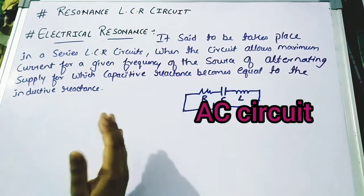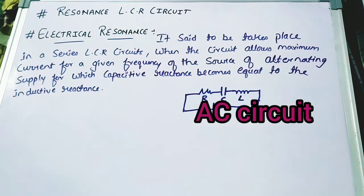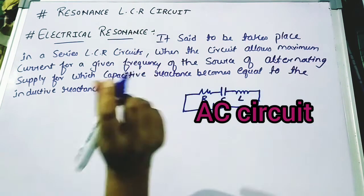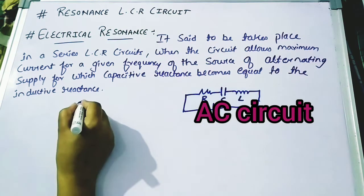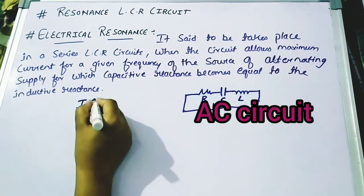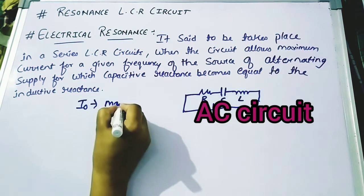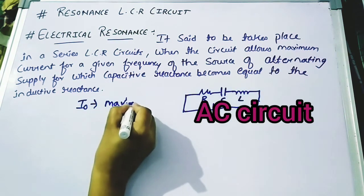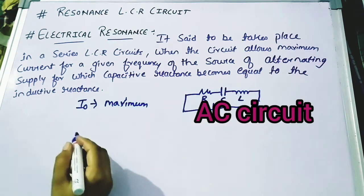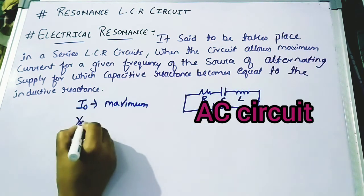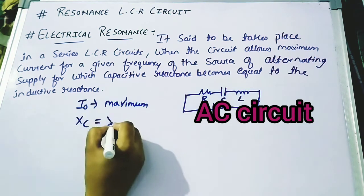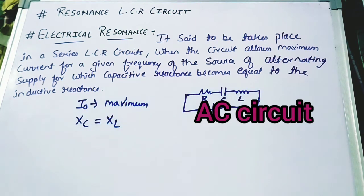So what is the condition for electrical resonance? Electrical resonance is said to take place in an LCR circuit when the circuit allows its maximum current for a given frequency of alternating supply — that is, when the capacitive reactance XC is equal to the inductive reactance XL. In this condition, electrical resonance will occur.